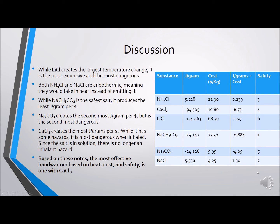When it comes to choosing which salt creates the most effective hand warmer, three categories must be considered: the joules emitted per gram of substance, the cost per kilogram of substance, and the safety of each substance. While lithium chloride creates the largest temperature change, it is the most expensive and the most dangerous — something you wouldn't want in a hand warmer. Both ammonium chloride and sodium chloride are endothermic, meaning they would take in heat instead of emitting it, the opposite of a hand warmer. While sodium acetate is the safest, it produces the least joules per dollar, less ideal for someone trying to make a profit. Sodium carbonate creates the second most joules per dollar but is the second most dangerous. On the other hand, calcium chloride creates the most joules per dollar and is safe when in solution. Based on this, the most effective hand warmer based on heat, cost, and safety is one with calcium chloride.